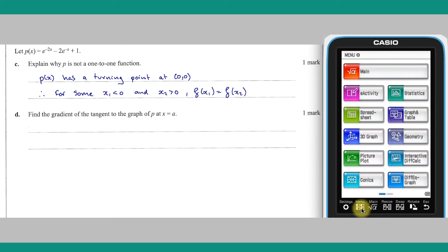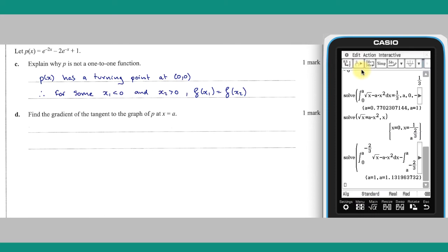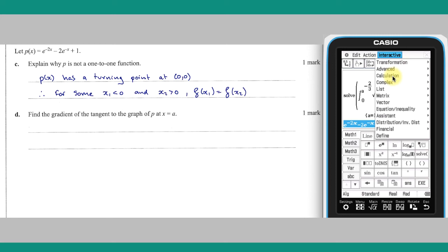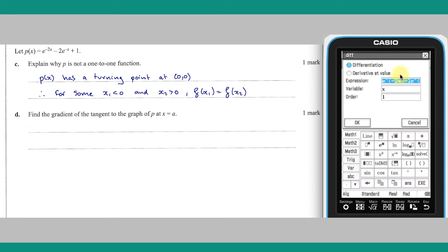Part D, the gradient of the tangent to the graph of P at the point X equals A, can be found by calculating the value of its derivative at that point. From the Classpad's main app, enter the function, select it, and choose Interactive Calculation Differentiation.